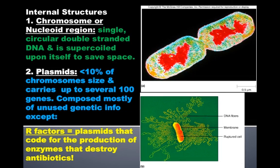Now we're going to look at the internal structures that are specific to prokaryotic cells. The chromosome or nucleoid region is pretty interesting in bacteria mainly because they don't have a nuclear membrane surrounding it to protect it. The chromosomes are in the form of a single circular double-stranded DNA helix, supercoiled upon itself to save space. In that electron micrograph to your right, the nucleoid region or chromosome is indicated by the red color.